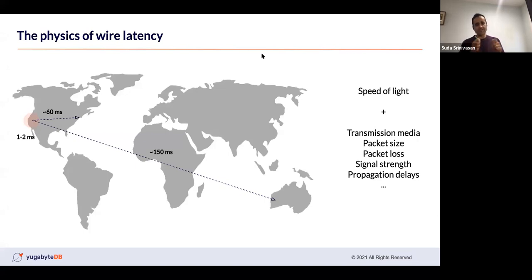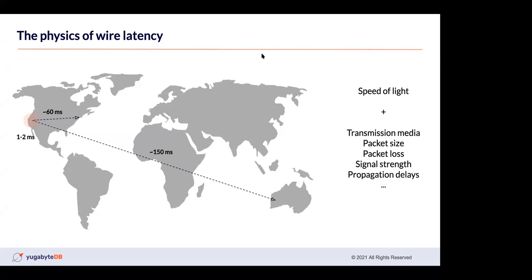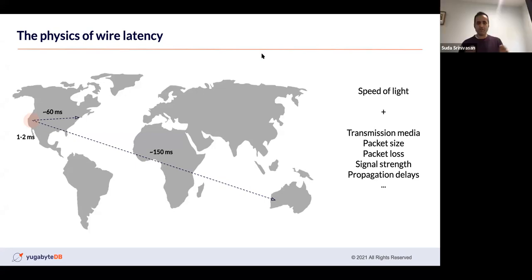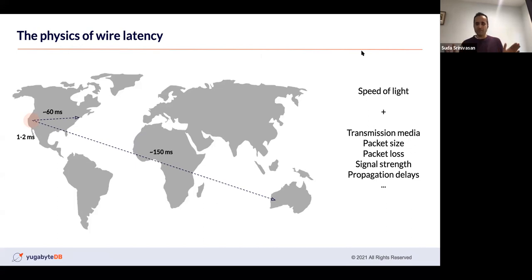As the distance between two points increases, typically the latency also increases. On AWS, for example, communication latencies within about a 100–150 mile radius are in the one to two millisecond range. Going coast to coast is around 50 to 60 milliseconds, and from the Western United States to Australia is about 150 milliseconds. So we're talking about real addition of latencies.